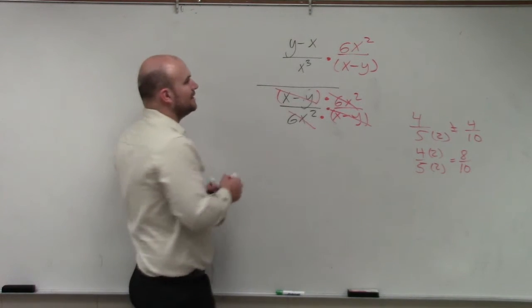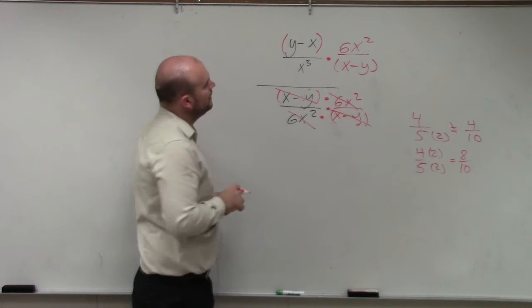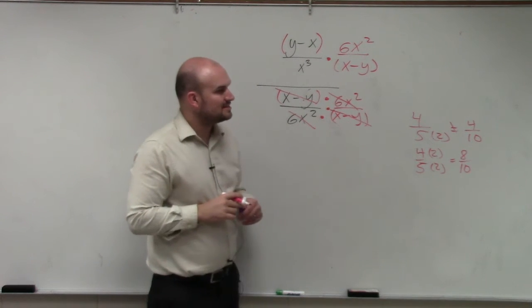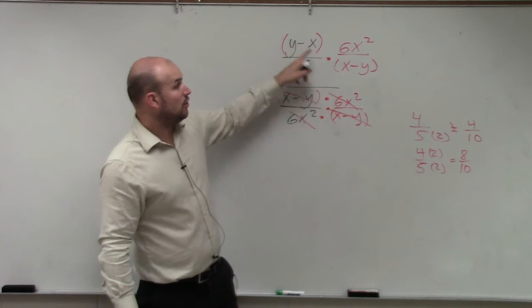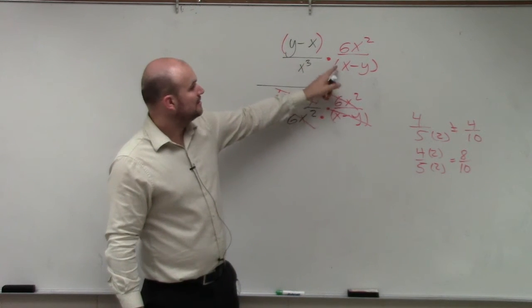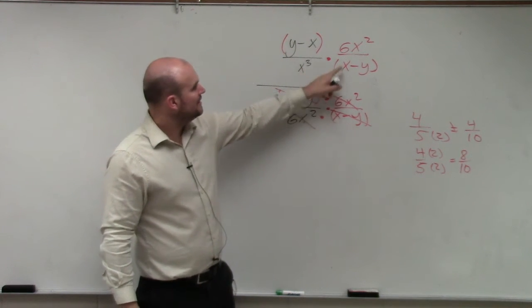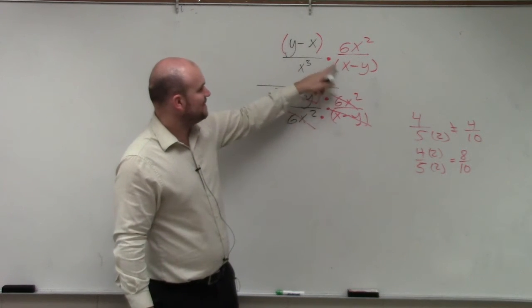Now, over here, the problem with this is these look very similar to each other, right? Yes. They're almost the same, but they're not. So, but one thing I could do is this is negative, that's negative. That's positive, that's negative. I could always factor out a negative, which would make that a negative.